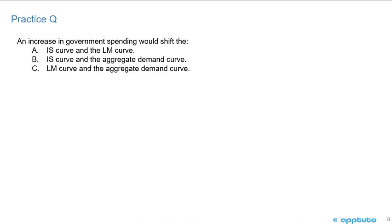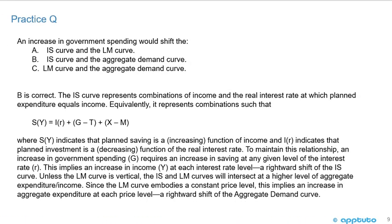Another quick practice question: an increase in government spending would shift — A, the IS curve and the LM curve; B, the IS curve and the aggregate demand curve; or C, the LM curve and the aggregate demand curve? This question is a little bit more tricky.